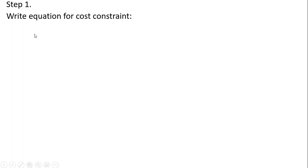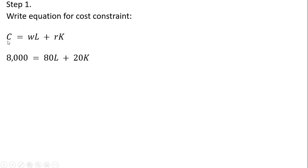Step one: let's write the equation for the cost constraint. The general equation is that our limited production budget equals the wage times units of labor plus the price of capital times units of capital. So C is $8,000, the wage is $80, and the price of capital is $20.